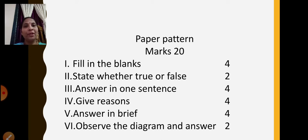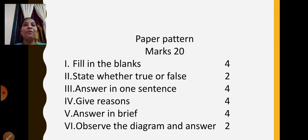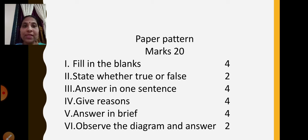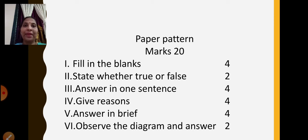So this is our paper pattern. The first question is fill in the blanks, which is for 4 marks. Second, state whether true or false, for 2 marks. Third, answer in one sentence, for 4 marks. Fourth, give reasons, for 4 marks. Fifth, answer in brief, for 4 marks. Sixth, observe the diagram and answer. You will not be typing or drawing anything in geography — you just have to click on the correct answer from the given choices.